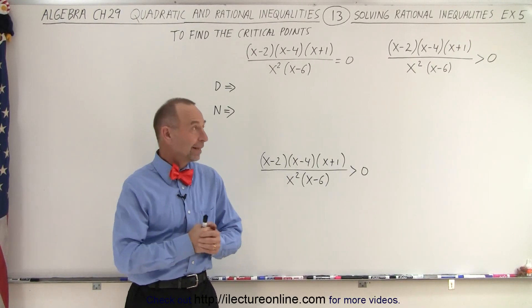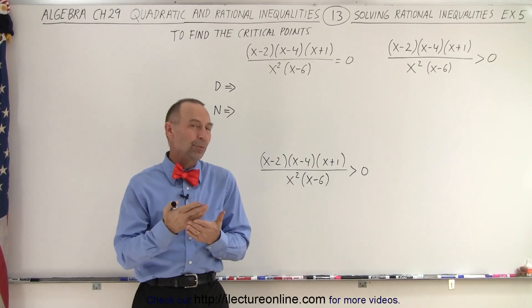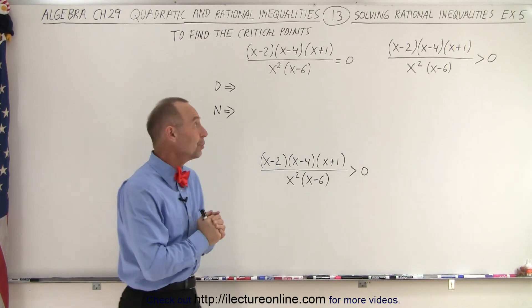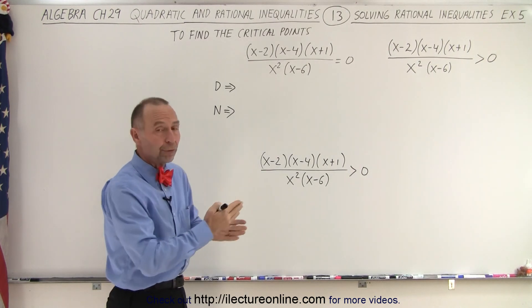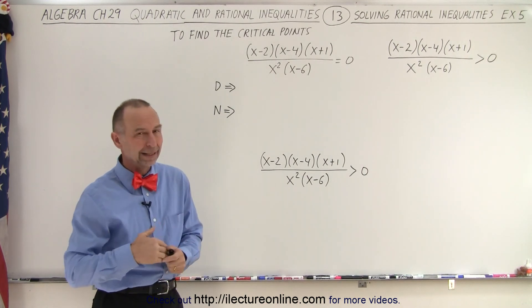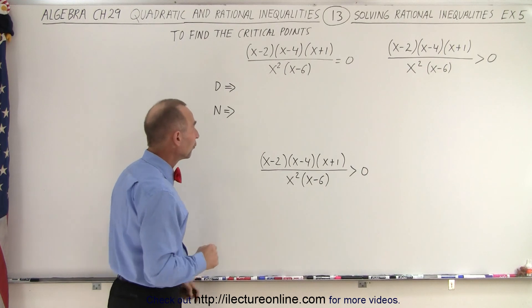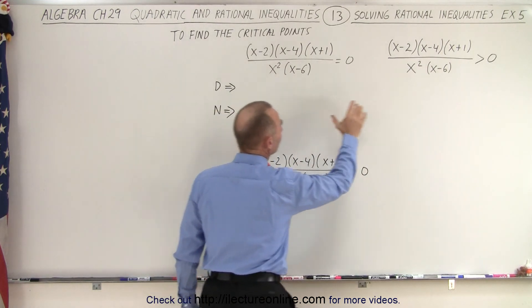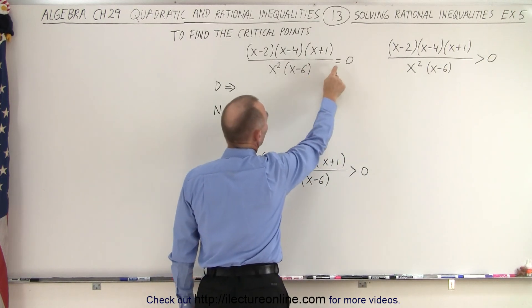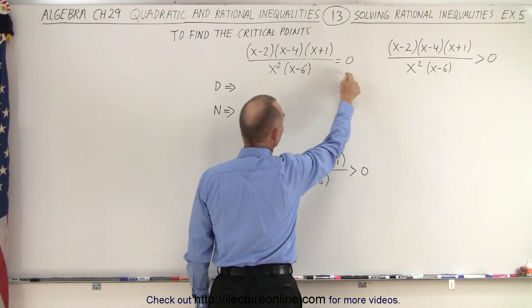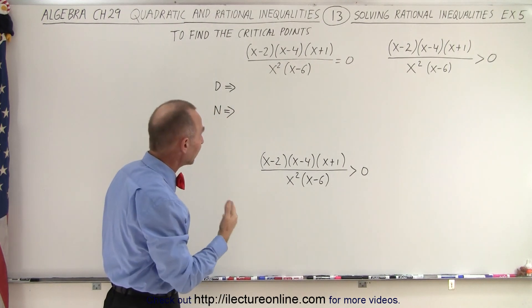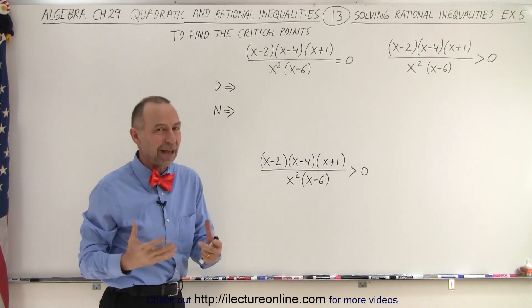Welcome to iLectroOnline. This example is somewhat similar to the previous one that we did, so it'll help us understand this technique. It's already put into a format that makes it easier to find the critical points, both for the denominator and for the numerator. For the denominator, we're going to take our inequality and change it into an equation equal to zero. Any value for x that makes the denominator equal to zero is a forbidden value.